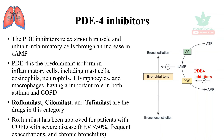Roflumilast can reduce exacerbations by up to 50% and is useful in asthma and chronic bronchitis. That covers methylxanthines and PDE-4 inhibitors. If you found this helpful, please click the like button, subscribe to the Pharmatopics channel, and share this video. Post any doubts in the comments section.